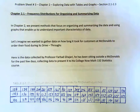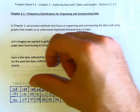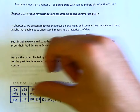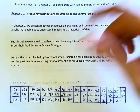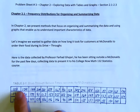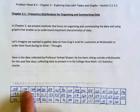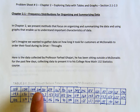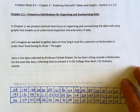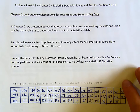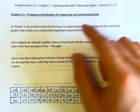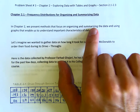Let's just imagine we have — I think this is 50 data values. For one person it took 107 seconds to get their food, the next person it took 139 seconds, then 197, and so on. The idea is for this chapter we're going to focus on organizing and summarizing data.